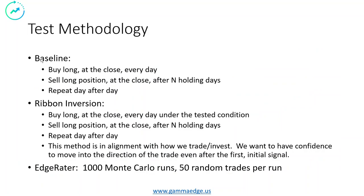So what's our test methodology? The baseline is straightforward: because markets are generally in an uptrend over a long period of time, we're going to buy long at the close every day and sell long at the close after holding N days — one day, two days, three days, all the way out — independent of what the market's doing. We're going to look at this distribution of time: if you hold N days, what does it look like? We do that day over day for literally over 3,000 days in the timeframe.